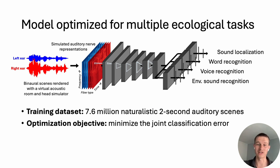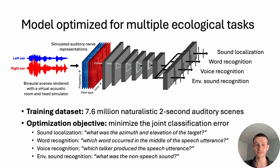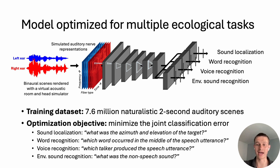Each scene consisted of a target speech sound at one location and diffusely localized non-speech noise. The weights of the neural network were jointly optimized for four classification tasks to operationalize different aspects of natural hearing: sound localization, word recognition, voice recognition, and environmental sound recognition. The schematic illustrates how the network weights are shared across the four tasks in the first six layers, and only the last couple layers are task-specific.